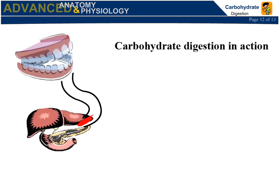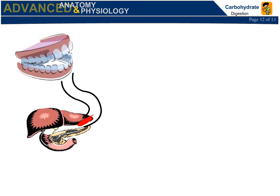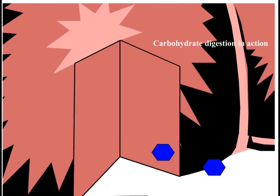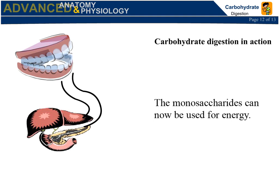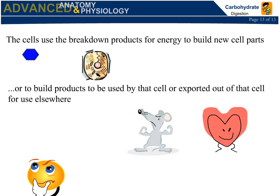Carbohydrate digestion in action: carbohydrates begin digestion in the mouth, travel through the esophagus and stomach, and then travel to the duodenum where they are chemically digested further. The pancreas secretes enzymes to break polysaccharides into disaccharides. The liver absorbs the monosaccharides, which can then be used for energy — to build new cell parts, to build products for that cell, to export out of the cell for use elsewhere, or for muscle contraction.